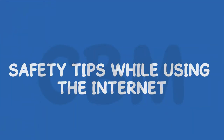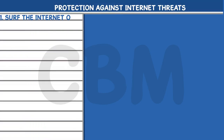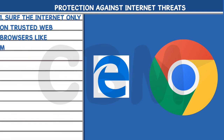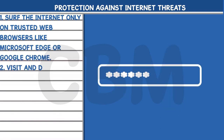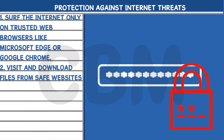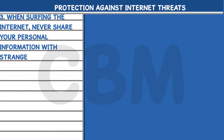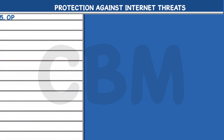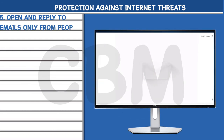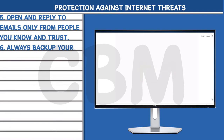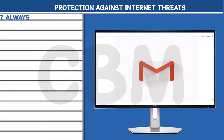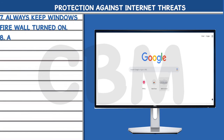Safety Tips While Using the Internet: 1. Surf the Internet only on trusted web browsers like Microsoft Edge or Google Chrome. 2. Visit and download files from safe websites only — look out for HTTPS in the address bar. 3. Never share your personal information with strangers. 4. Always use a strong password for your email accounts and never share it with anyone. 5. Open and reply to emails only from people you know and trust. 6. Always backup your files on the computer. 7. Always keep Windows Firewall turned on. 8. Always update your operating system and anti-virus software.